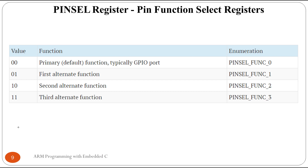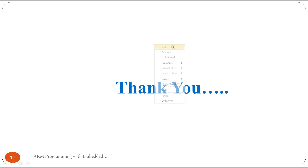We can use these three registers to select different functionalities. For example, consider any pin select register with pin number X having four functionalities. To select one functionality — say the first one — the value assigned to it is 01. We can select it by writing an instruction like 'pin select function one'. If we write zero, the first functionality (GPIO) is automatically selected. Likewise, we can select any one of the four functionalities at a time.